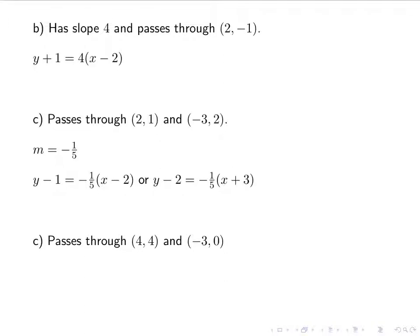And as my last one, we have a line that passes through 4, 4 and negative 3, 0. So again, I need to find the slope. And if you use the slope formula, you should be getting 4 sevenths. And then using my first point in point-slope form, I get y minus 4 equals 4 sevenths x minus 4. Or, using my other line, my other point, I have y minus 0, which is just y. So y equals 4 sevenths times x plus 3.